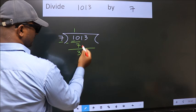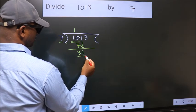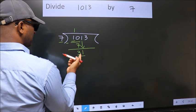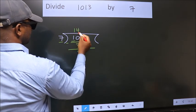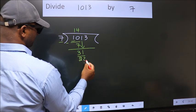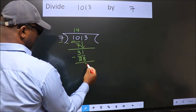After this, bring down the beside number. So, 1 down. So, 31. A number close to 31 in the 7 table is 7 fours, 28. Now we subtract. We get 3.